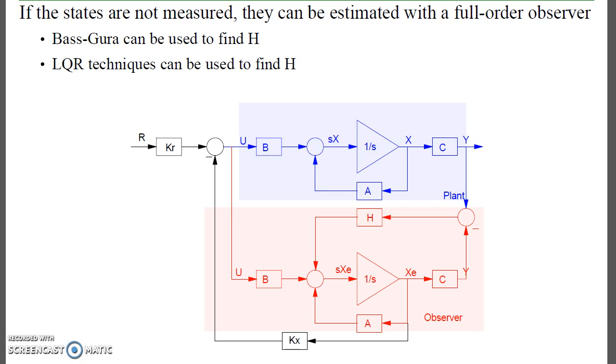Now, either way, the observer gains are somewhat arbitrary. In both cases, as long as they're stable, the observer states will converge to the plant states. Once it's converged, it'll track.